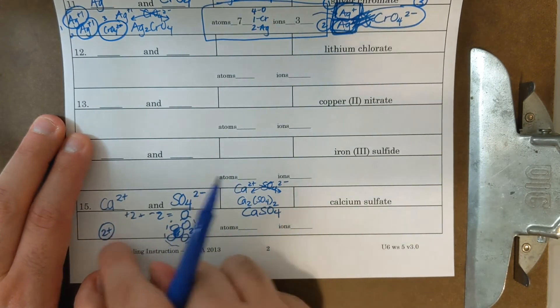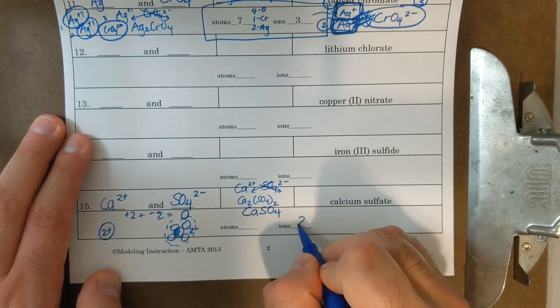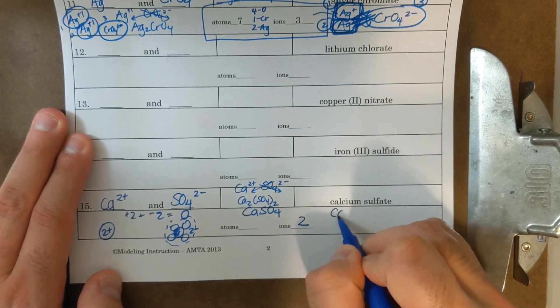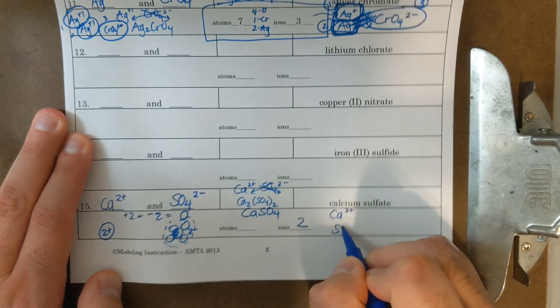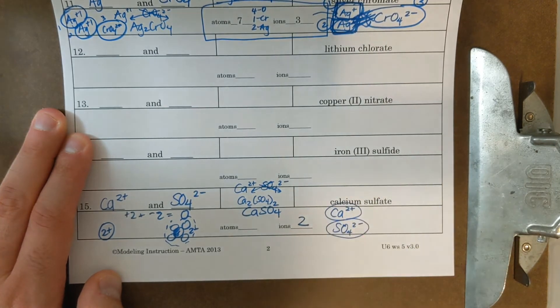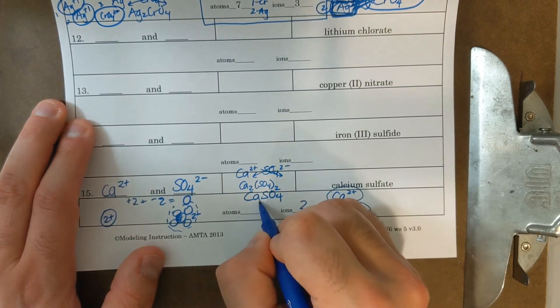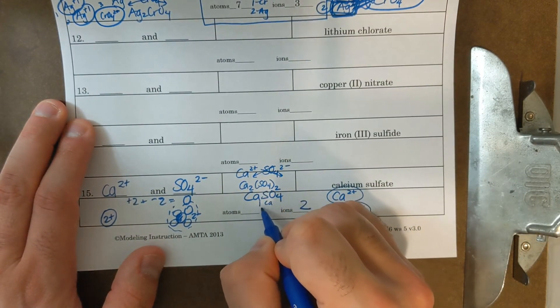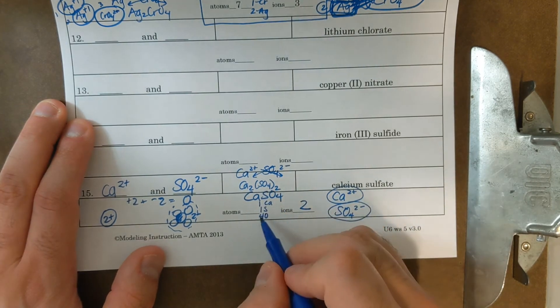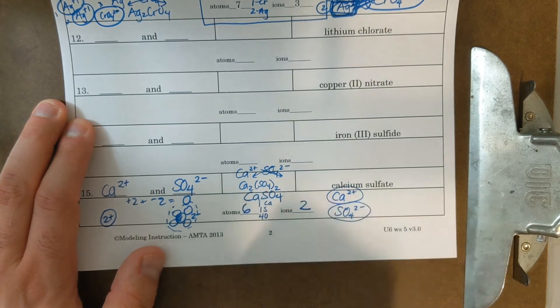Now if I want to count how many ions there are, there's one calcium and one sulfate. There are two ions. There's a calcium ion and a sulfate ion. That's it. There's only those two ions. But for atoms, that's a little bit of a different story. There's one Ca, there's one S, and there's four O's. So four, five, six atoms total.